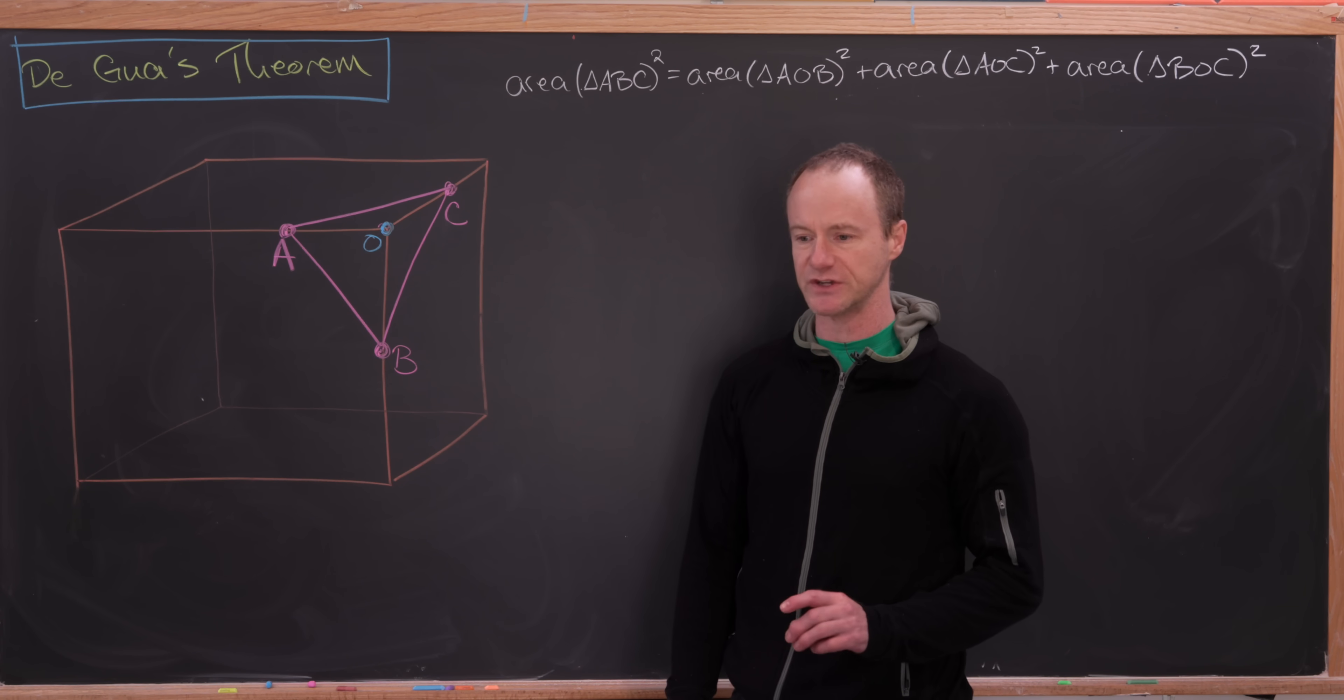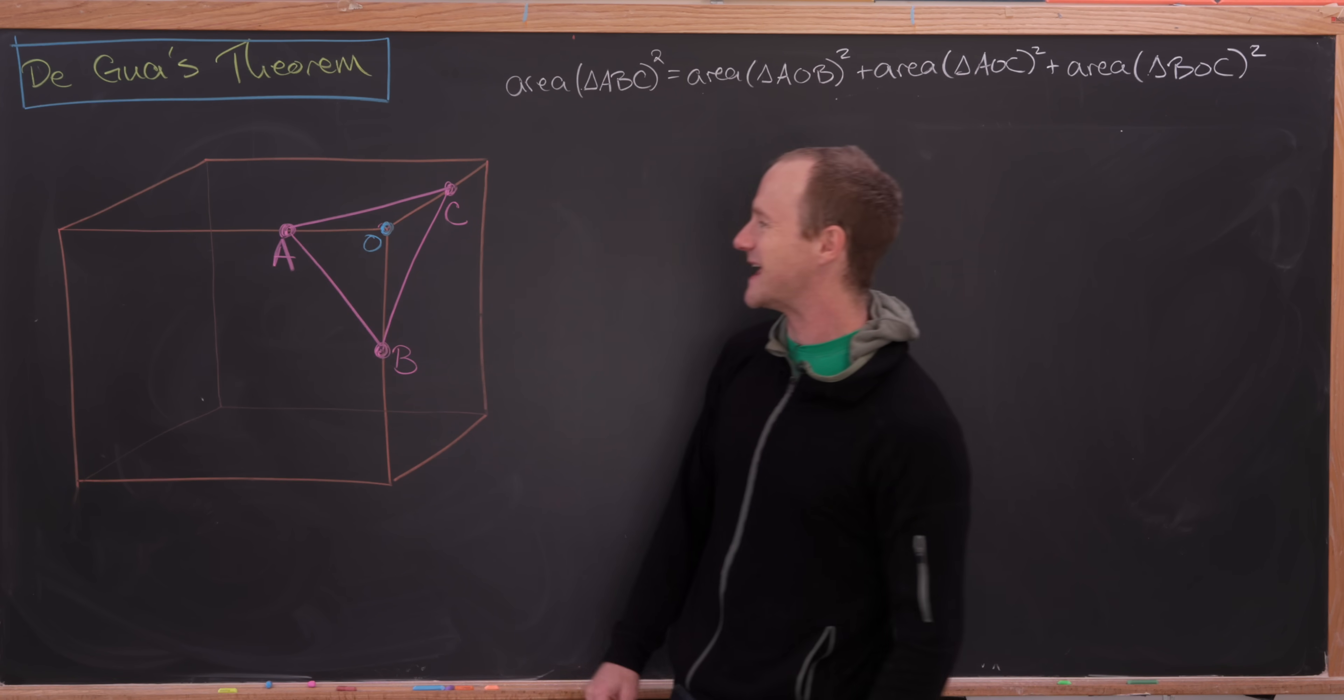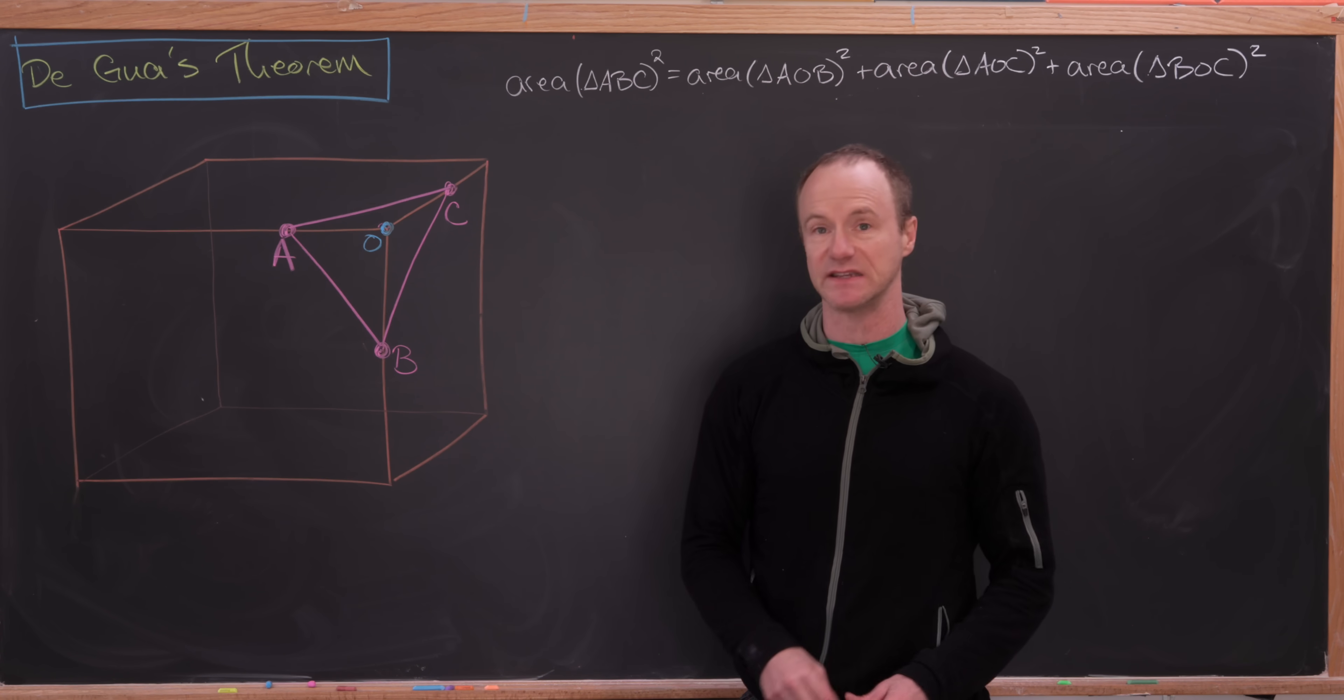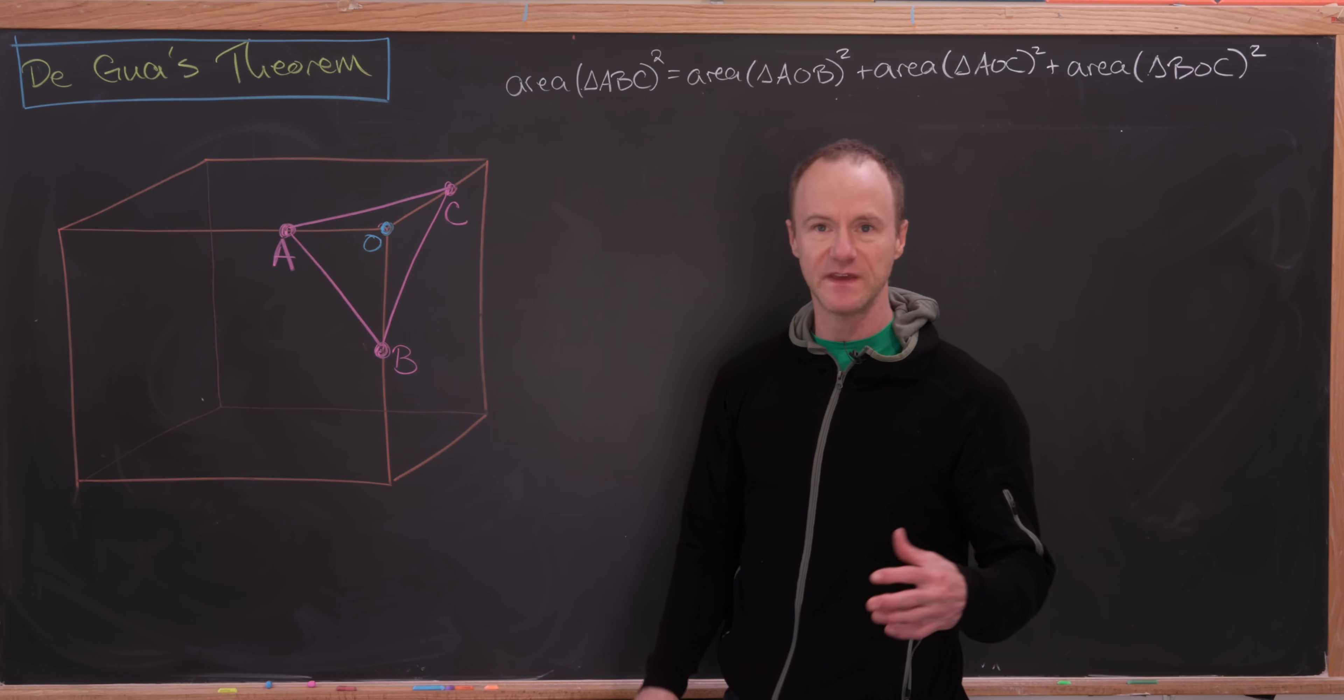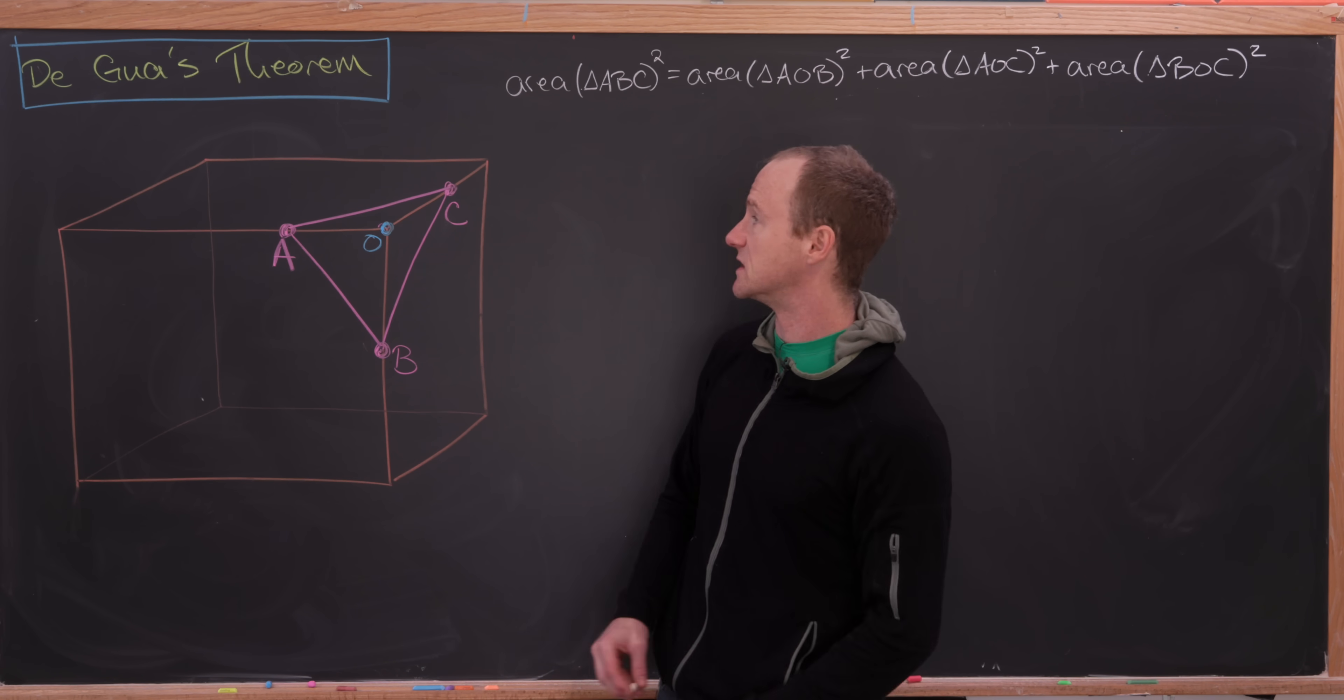But if we build those three triangles, there's kind of a bonus triangle that we're getting for free. And that's the triangle on the inside of the box, which is triangle A-B-C. And what this three-dimensional version of the Pythagorean theorem, known as Degua's theorem,